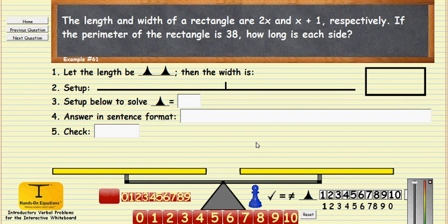Let's consider this example and see how we would do it with the hands-on equations interactive whiteboard. The length and width of a rectangle are 2x and x plus 1 respectively. If the perimeter of the rectangle is 38, how long is each side?